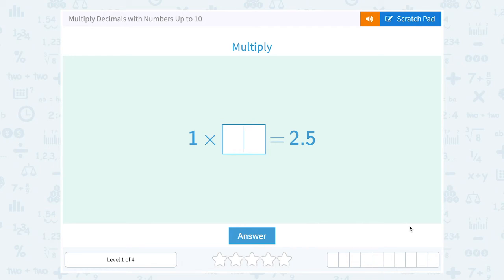Let's take a look at how to multiply decimals with numbers up to 10. 1 times some number is equal to 2.5. Well, remember, multiplying by 1 doesn't change our number, so it must have been 2.5. 1 times 2.5 would equal 2.5.